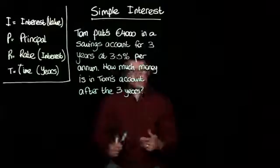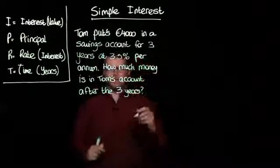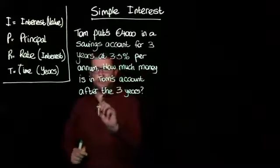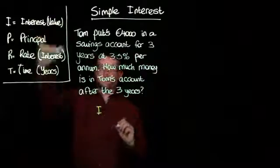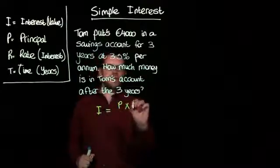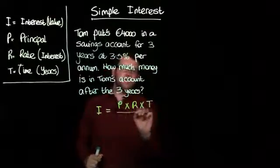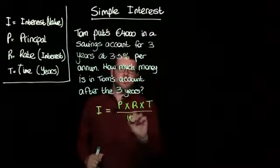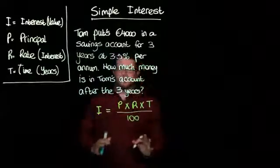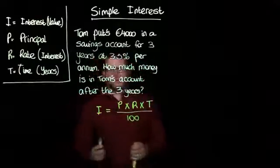To solve this problem, we're going to use the standard simple interest formula. So I, interest, that's the interest value, is equal to the principal times by the rate times by time, all divided by 100. Now that's a standard simple interest formula. And all we need to do now is fill in the blanks.